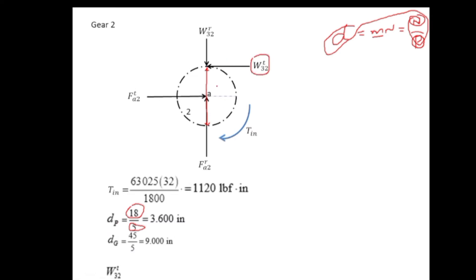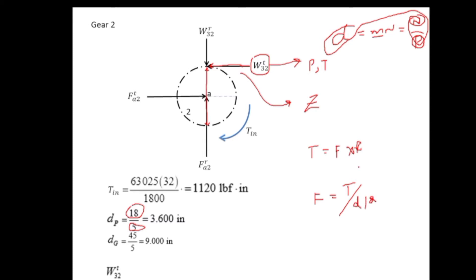Now let's find the tangential force exerted by gear three on gear two, w32t, which acts in the z-direction. This force is responsible for torque transmission. Since torque T = F × r, we get w32t = T / r = T / (d/2). Substituting torque T = 1120 lbf·in and d2 = 3.6 inches, we get w32t = 1120 / 1.8 = 622 lbf.